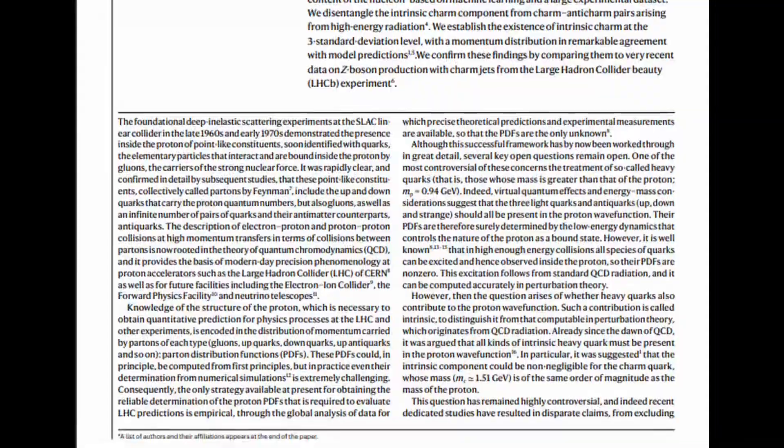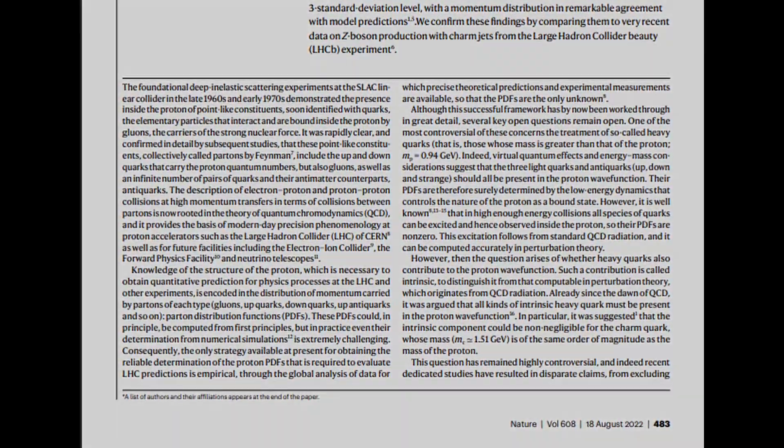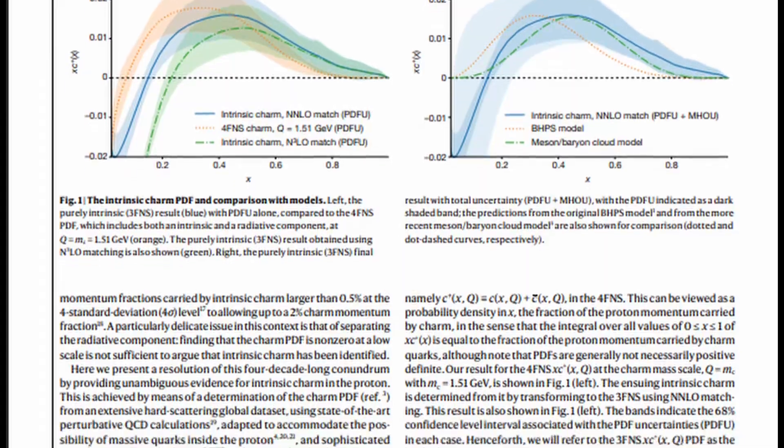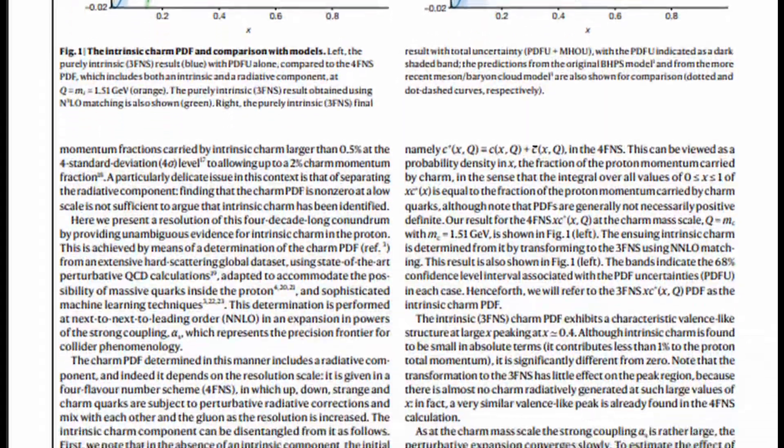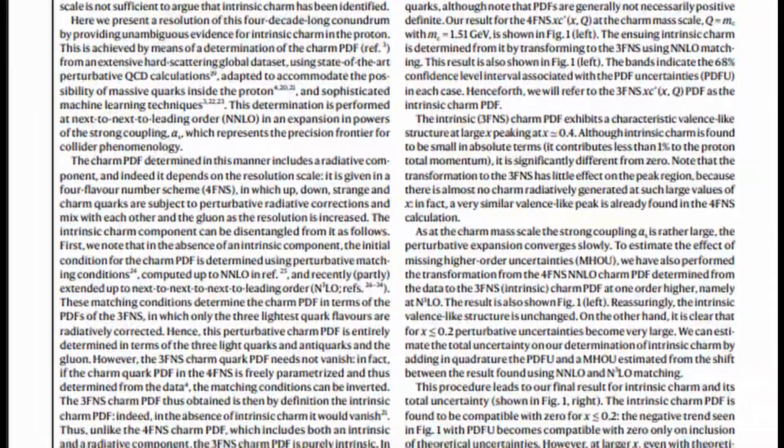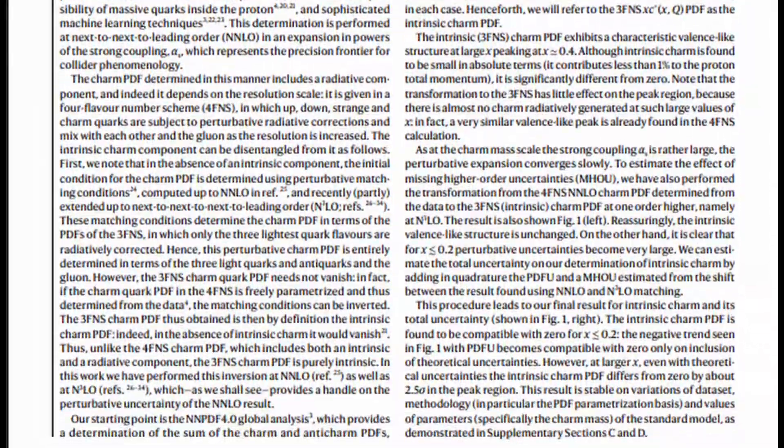It details that through data analyzed by machine learning, particle physicists appear to have discovered that the common proton, once thought to have two up quarks and a down quark, may actually contain two others: a charm and anti-charm quark. This could have a profound effect on our understanding of particle physics.